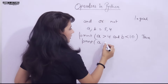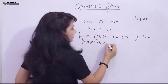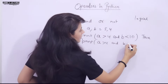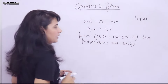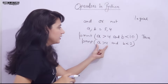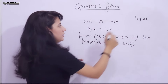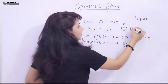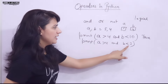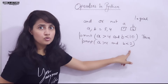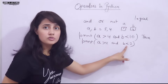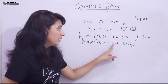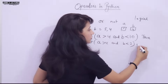Now if I write something like: print(a > 4 and b < 3), in this case a > 4 is True because a is 5, but b < 3: b is 4, so that condition is not True. So this is True and this is False. If one is True and one is False, the AND operator will give False.